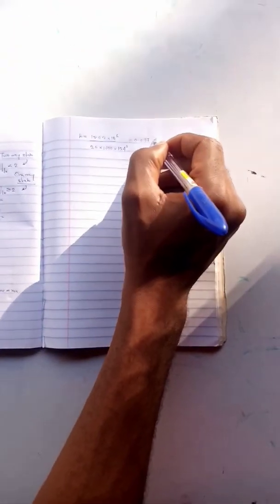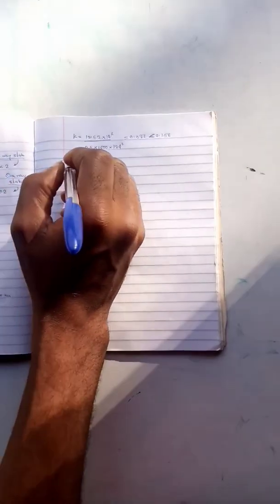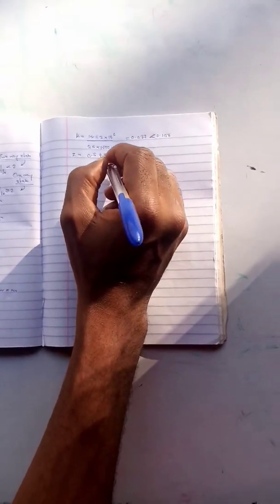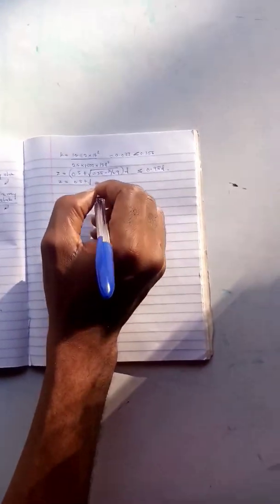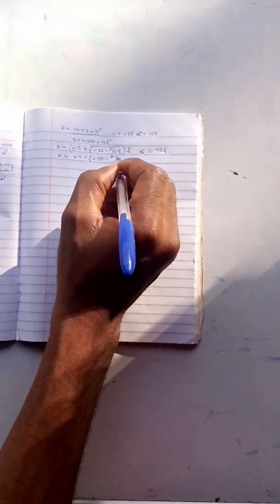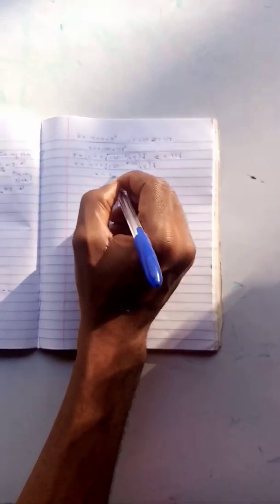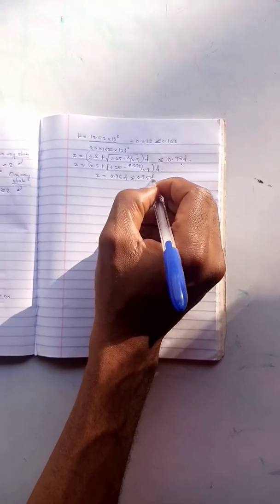For our z value, from our formula we know that to obtain z we have 0.5 plus square root of 0.25 minus k over 0.9 multiplied by d. This should be less than 0.95d. We get a value of 0.983d which is greater than 0.95d, so we adopt z equals to 0.95d.